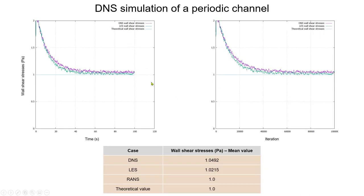When we compare DNS, LES, and RANS: RANS has an error of 0%, LES is about 2%, also about 2-5% — acceptable. DNS is getting more error because we still need a finer mesh to resolve better the scales. LES is just putting a small model in the sub-grid scales and getting a better resolution. So this is the case we're going to run.